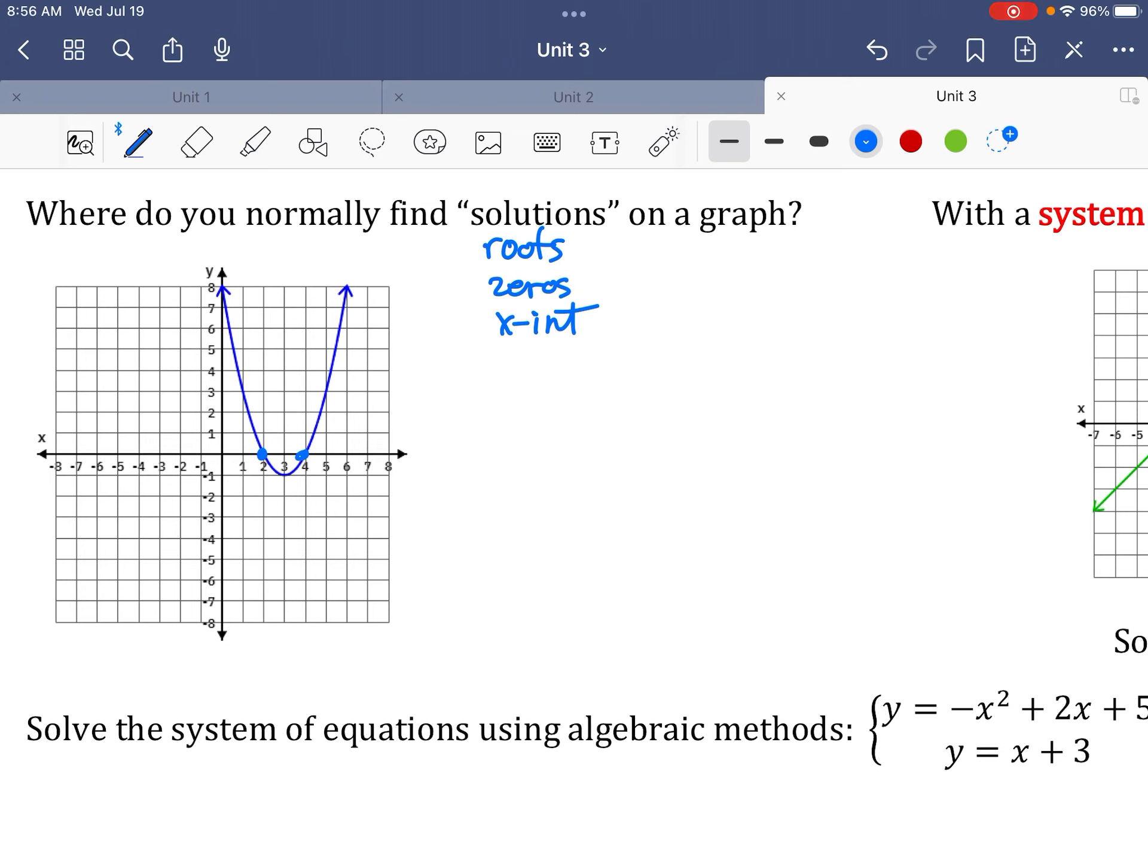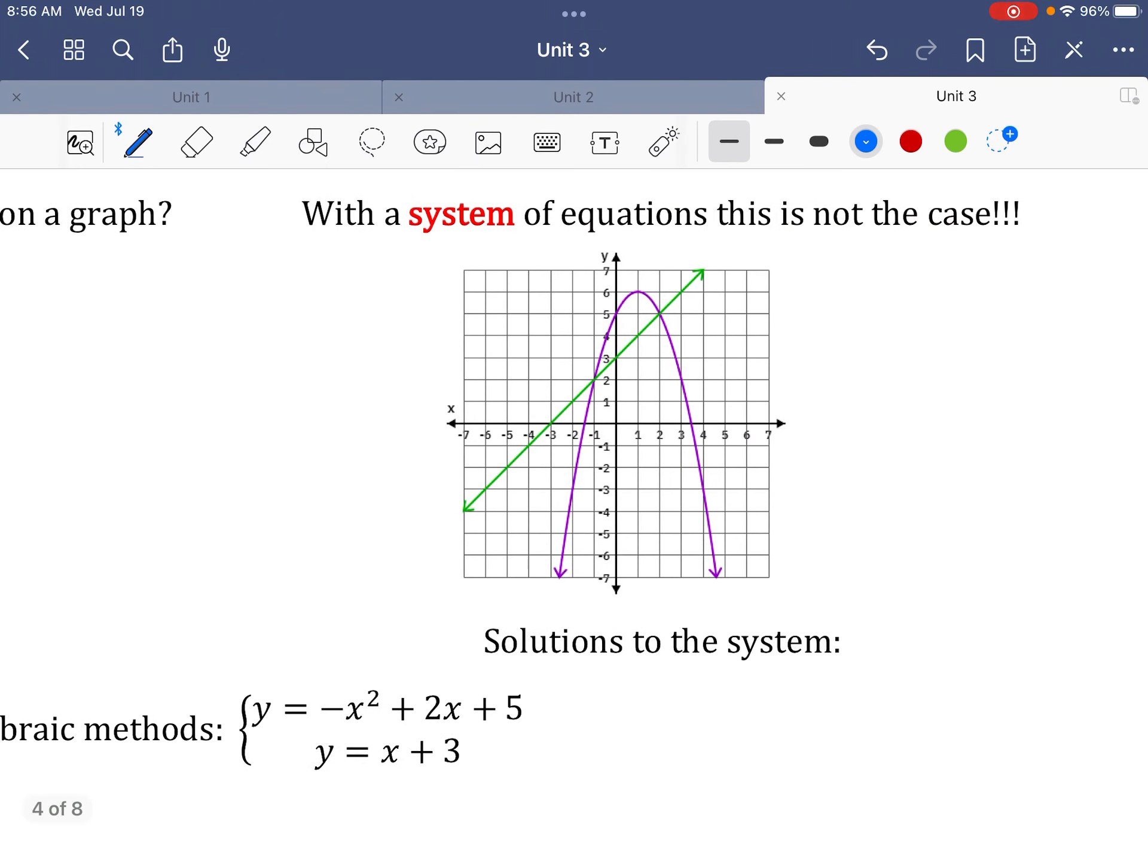So this parabola, the solutions would be x equals 2 and 4, okay? Whereas, when you start to get two equations, it changes. No longer do I even care about my x intercepts, I don't care. The solution to this system of equations are the points where they intersect. And so those would be, my solutions would be, let's see, negative 1 and 2, and you name the whole coordinate.